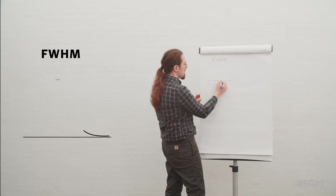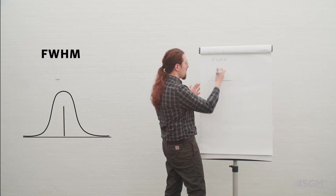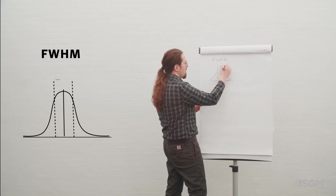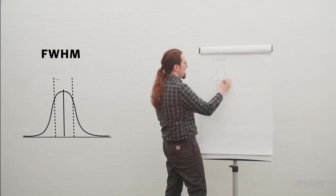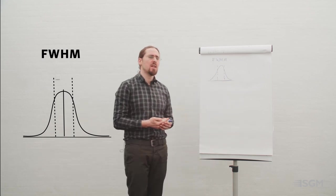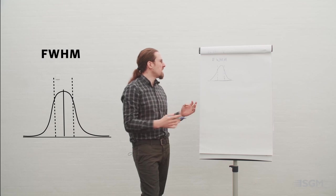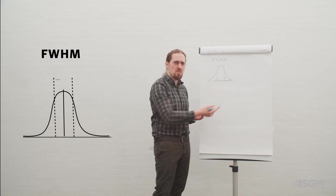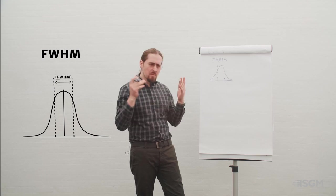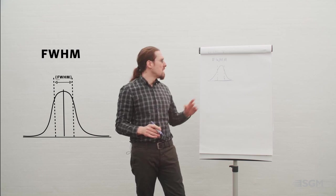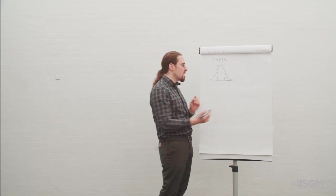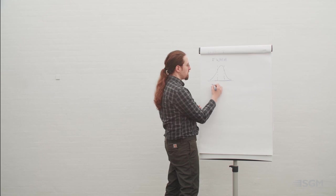When talking about full width half maximum, you will see a graphic that very clearly defines the area used to evaluate a specific LED — basically a range in a spectrum or range of wavelengths that are specifically relevant for the application. This is closely related to something we use every day: the beam angle.